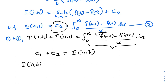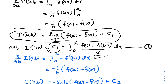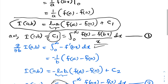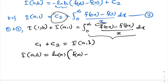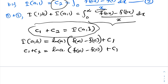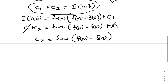We know I(a,b) equals ln(a) times [f(infinity) minus f(0)] plus C₁. Substituting and simplifying, C₁ cancels and we find C₂ equals ln(a) times [f(infinity) minus f(0)].